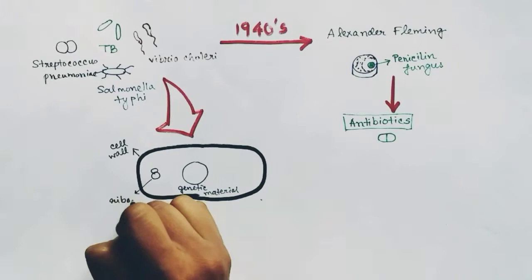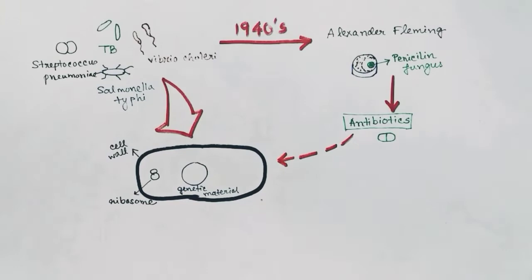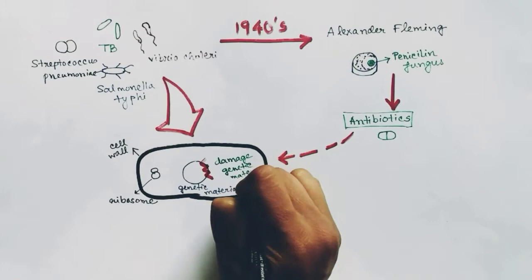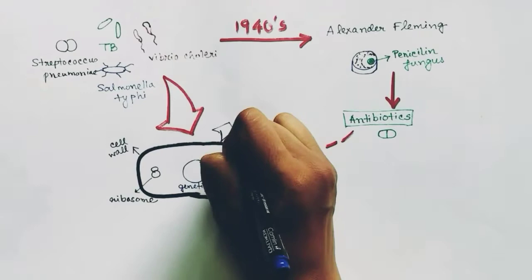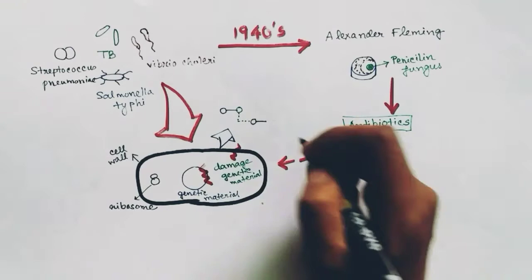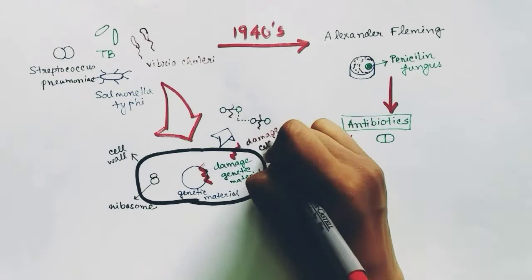Now, what does the antibiotic do? The antibiotic can kill bacteria in various ways. It can damage the genetic material of the bacteria, or it can damage the cell wall of the bacteria. The cell wall has different chemical bonds, and the antibiotic can break those chemical bonds of the cell wall, thus damaging it.